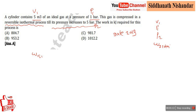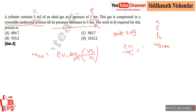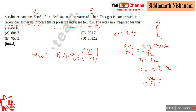We know the isothermal work formula: W = p1·v1·ln(v2/v1). But only v1 is given; v2 is not provided. However, using the general gas equation p1·v1/T1 = p2·v2/T2, and since it is an isothermal process T1 = T2, we get p1·v1 = p2·v2. From this, the ratio v2/v1 = p1/p2.